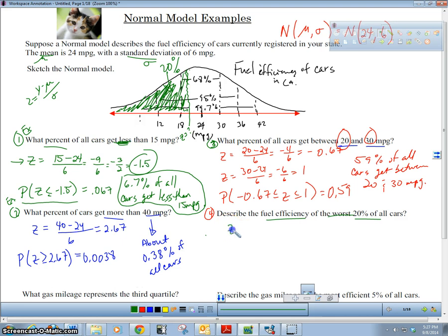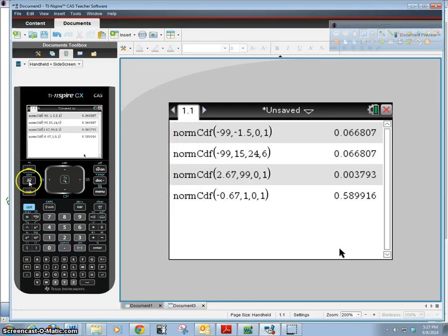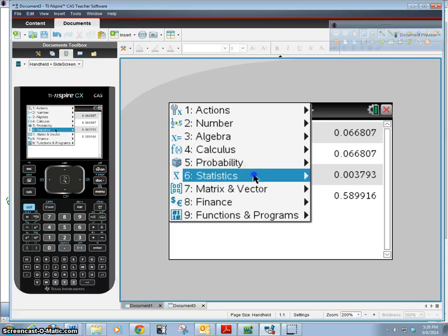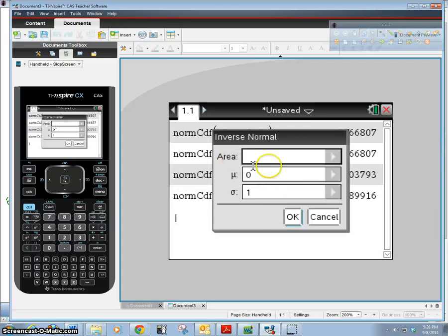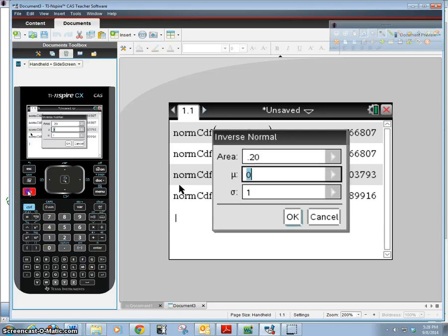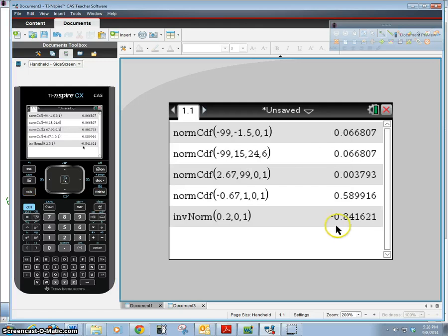We're gonna use the inverse norm. Let's go down in our calculator here. Remember that the normal CDF gave us the percent, so we're gonna go backwards, and a function that goes backwards is an inverse function. So menu, statistics, distributions, inverse normal. The area - remember the percentage is the area under the curve - so point two zero because 20%. Our mu is zero and our standard deviation is one for our z-score.